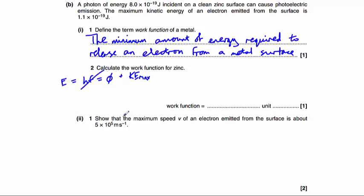We can get rid of the hf term here. So we get the work function equals the energy of the photon, take away the maximum kinetic energy of the electron, which equals 8 times 10 to the minus 19 take away 1.1 times 10 to the minus 19, which gives us 6.9 times 10 to the minus 19 joules.